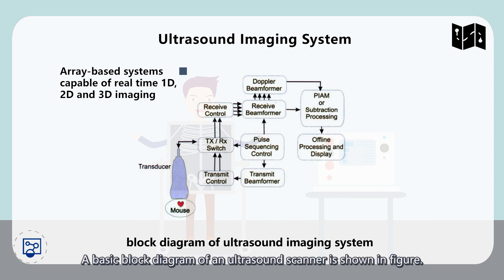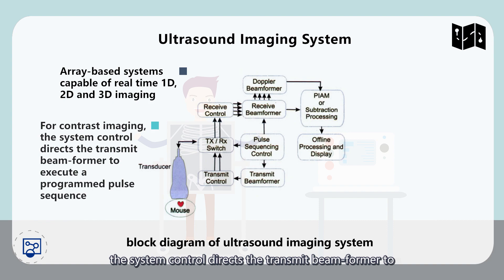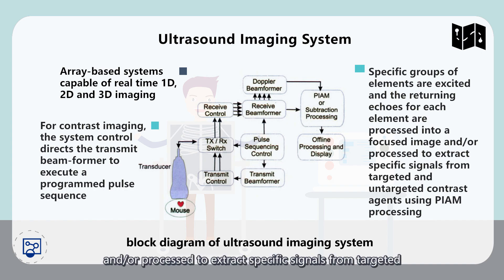A basic block diagram of an ultrasound scanner is shown in the figure. For contrast imaging, the system control directs the transmit beamformer to execute a programmed pulse sequence. Specific groups of elements are excited, and the returning echoes for each element are processed into a focused image and/or processed to extract specific signals from targeted and untargeted contrast agents using PIAM processing.